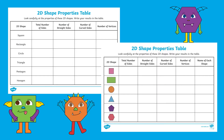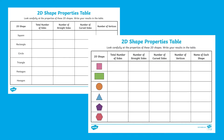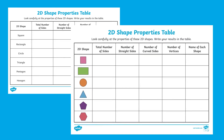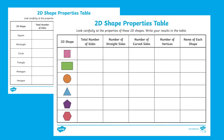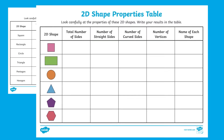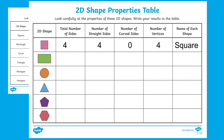The next resource comes in two variations: one with a picture of the 2D shape and one with the name of the 2D shape. Children then need to look carefully at the properties of the 2D shapes and write their answers on the table.